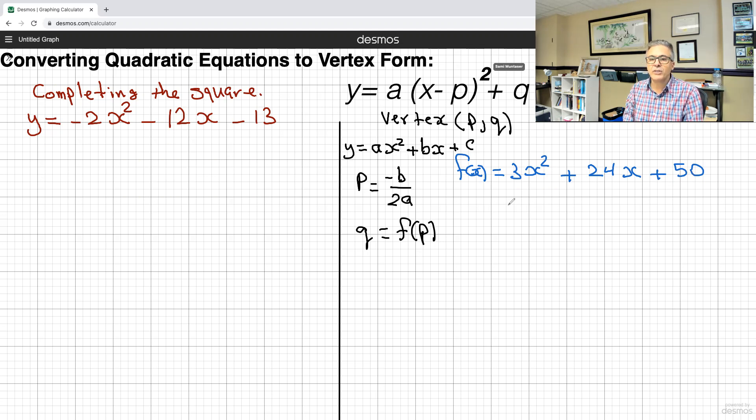So let's find p first. So to find p, it's negative b. And as we agreed, b is the 24 here, so it's going to be negative 24 over 2a, and a is 3. So that's negative 24 over 6, which gives me negative 4.